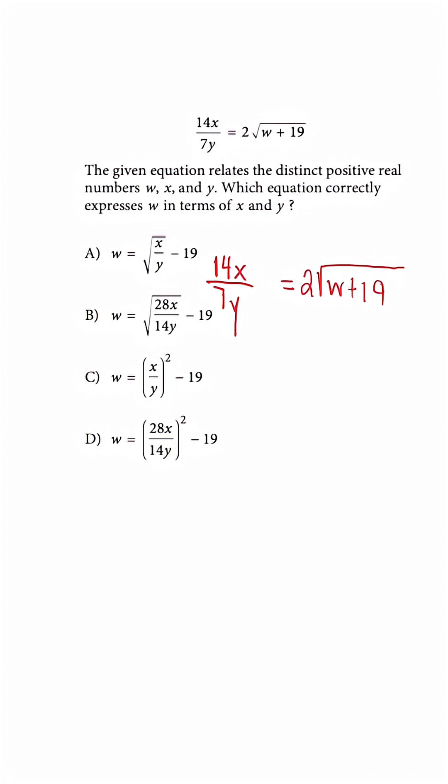A common rearranging formula you'll see on the SAT family is one that involves more than one variable. But we're trying to solve for W, and to do that, we have to isolate the radical.